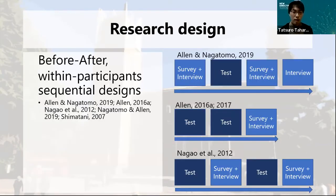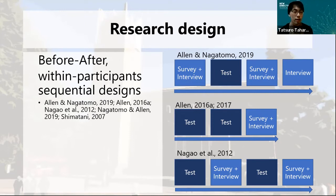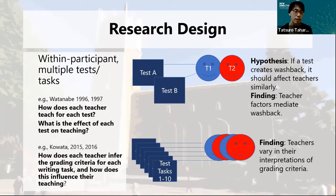In research design, there are three studies using before-and-after or within-participant sequential designs. These studies dealt with baseline data, as is recommended in washback research. For instance, in Arlen and Nagatomo, senior high school students completed a survey and interview. This data was used as baseline data and was compared to a second survey and interview after taking a new test — the TEAP test. Another type of research design was a between-participant design.